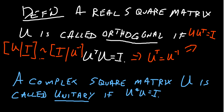The complex counterpart of an orthogonal matrix is what we call a unitary matrix. Whenever we talk about complex matrices, we never take the transpose — that's bad news for complex matrices. Instead, we want the conjugate transpose. A unitary matrix is a complex matrix where the conjugate transpose equals its inverse.